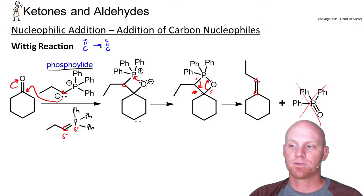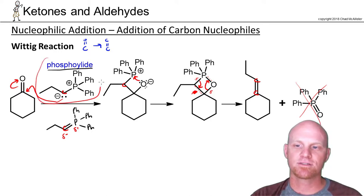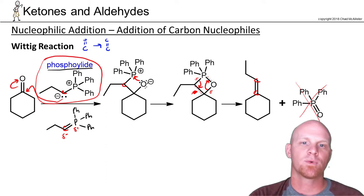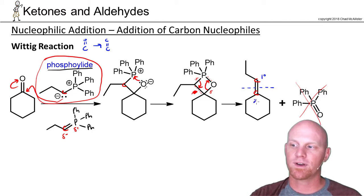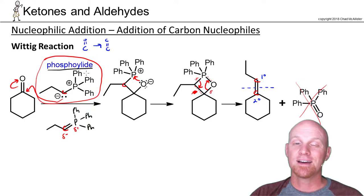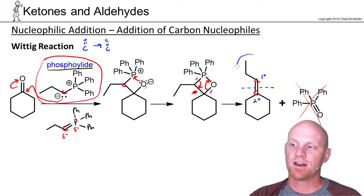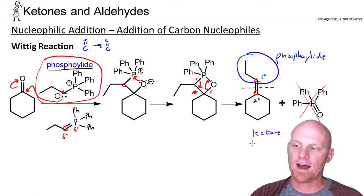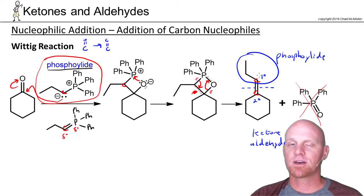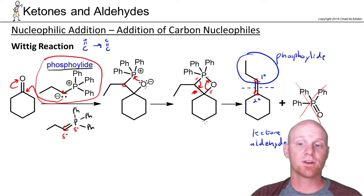That is the Wittig reaction — turning a carbon-oxygen double bond into a carbon-carbon double bond. The mechanism was three steps, but there's more to it. Looking at this from a retrosynthesis perspective, we're making the double bond between what used to be a primary carbon and a secondary carbon. Since the phospho-ylide is made via an SN2 reaction, whichever side of the double bond is less substituted is the one you want to build into your phospho-ylide, with the more substituted side being the ketone or aldehyde.